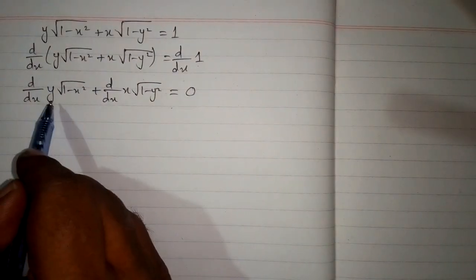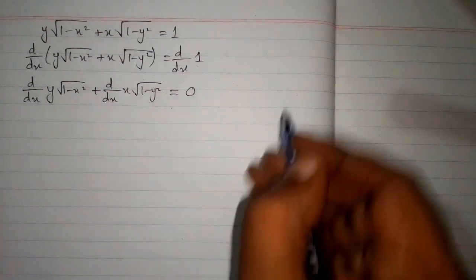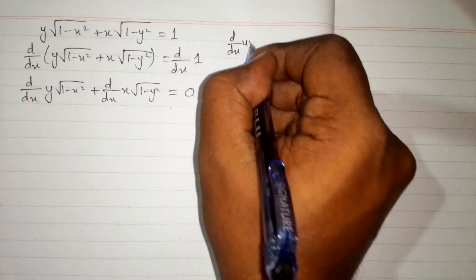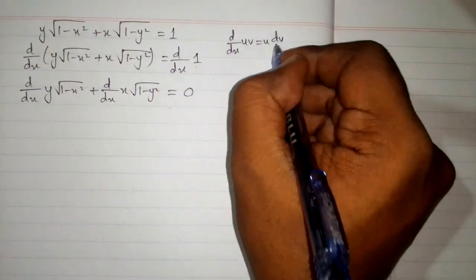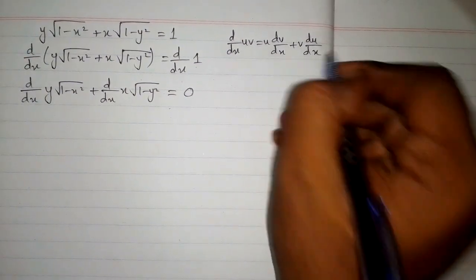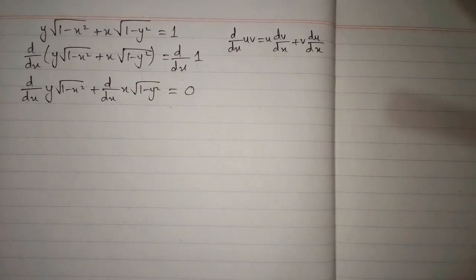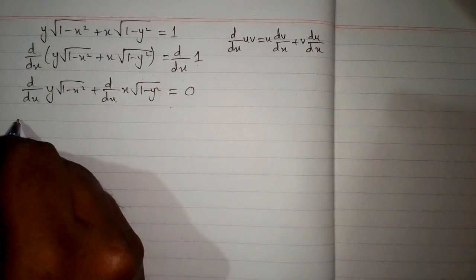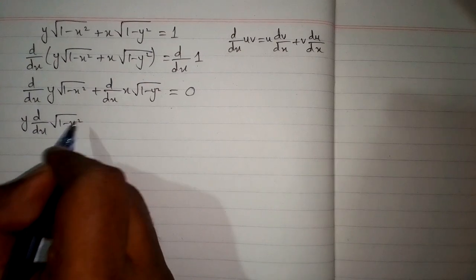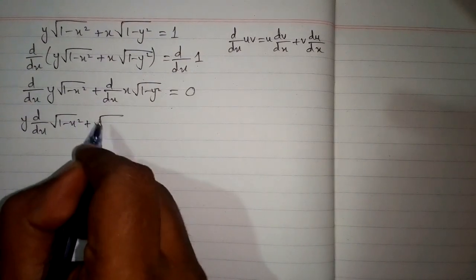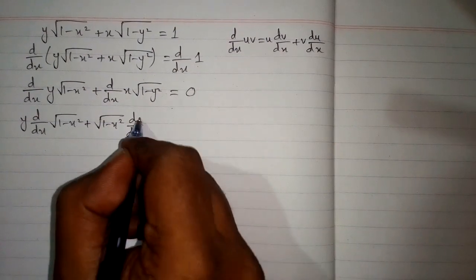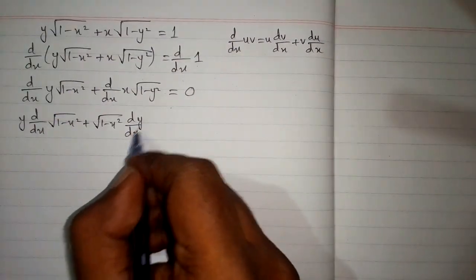Now we will apply the product rule of differentiation, which is d/dx of uv equals u times the derivative of v plus v times the derivative of u. So this will become y times the derivative of square root of (1 minus x squared) plus square root of (1 minus x squared) multiplied by the derivative of y.